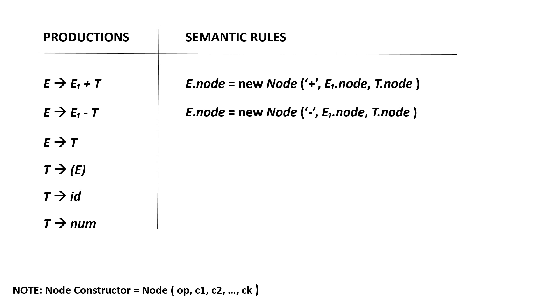The same thing will be applied to the second production. In the third one, e derives t will be just e dot node is equals to t dot node. The same with the fourth production.